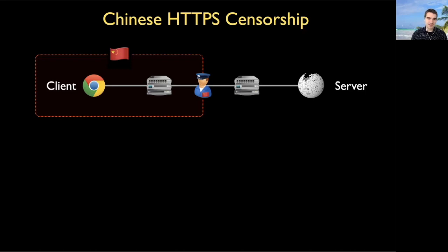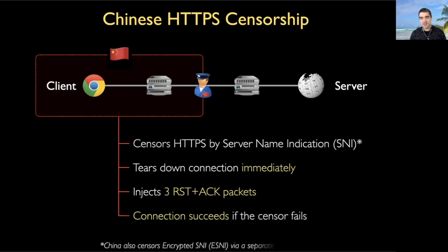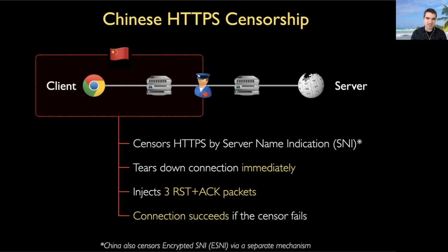This SNI censorship system has a few known properties. It censors by looking for the server name indication field. It tears down the connection immediately upon seeing this. It does this tear down by injecting three reset ACK packets. And if for some reason the censor fails, the connection will still succeed. So let's see what this looks like.